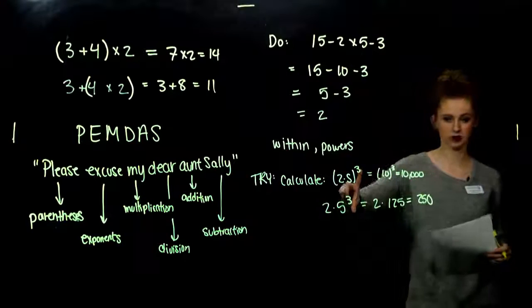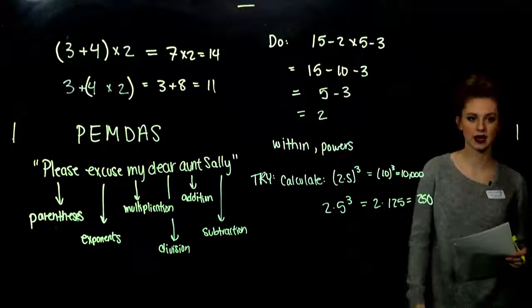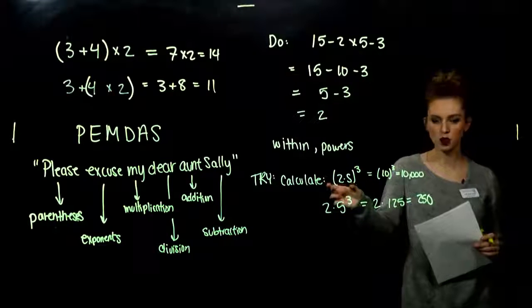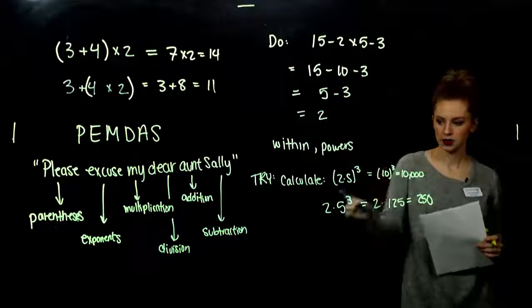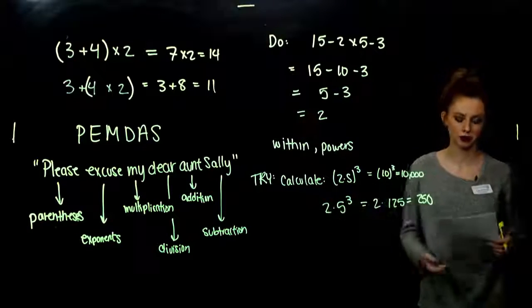So, yeah. It makes a big difference if I have groupings on the outside of my powers. Because, this one is telling me, cube, everything on the inside, gets your really big number. This one is just saying, cube, 5. Then, multiply it by 2.